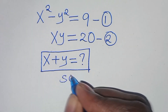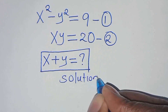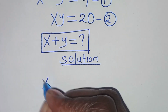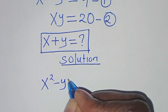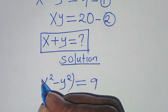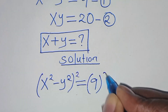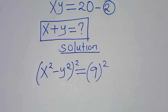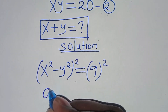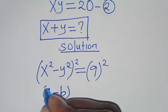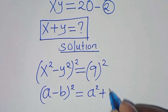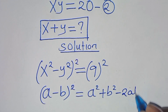Let's provide a solution. From equation 1, which is x squared minus y squared equals 9, the first step is to square both sides. So x squared minus y squared, squared, is in the form of a minus b squared, which we can express as a squared plus b squared minus 2 times ab.